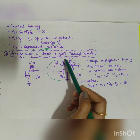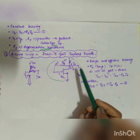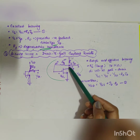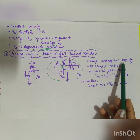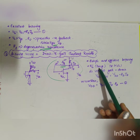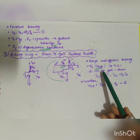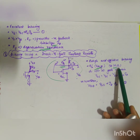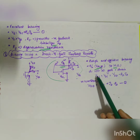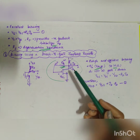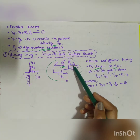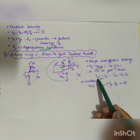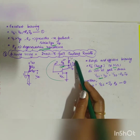The last configuration is drain-to-gate feedback resistor biasing. A high-impedance gate resistor RG is connected from drain to gate. It is a simple and effective biasing method. RG is very large, in the range of megaohms.